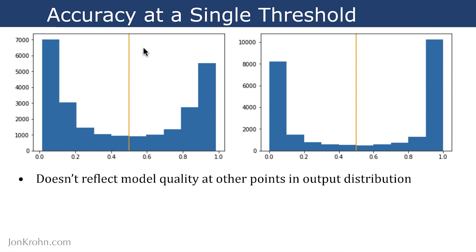So one problem with having this single threshold is that it doesn't reflect model quality at other points in the output distribution other than distinguishing outputs that are less than or greater than that single threshold value.